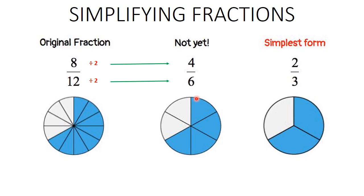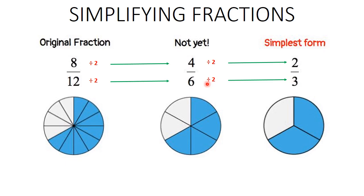But this is not the simplest form yet. Can we divide both numerator and denominator again by a whole number? Yes — we can divide 4 by 2 to get 2, and divide 6 by 2 to get 3. Now imagine if the denominator were 5 — you cannot divide 5 by 2 without leaving a remainder. We are not looking for remainders. To simplify a fraction, you must divide both numerator and denominator by the same whole number with no remainders in each case.